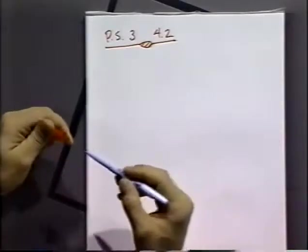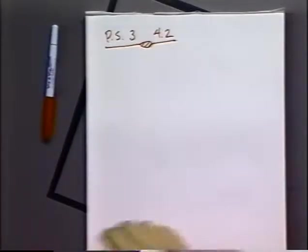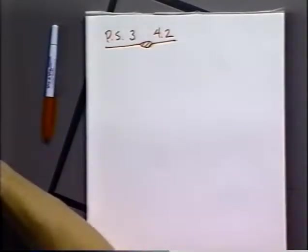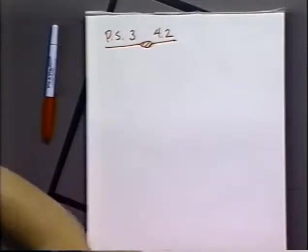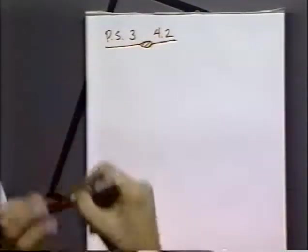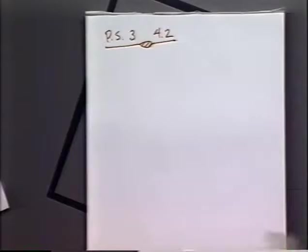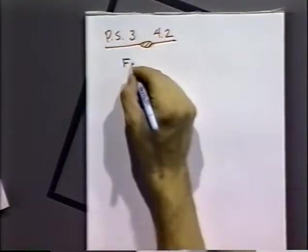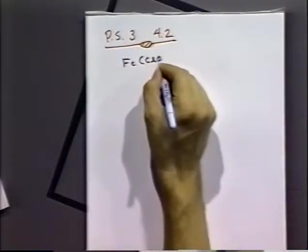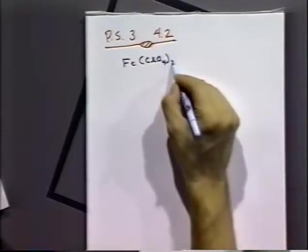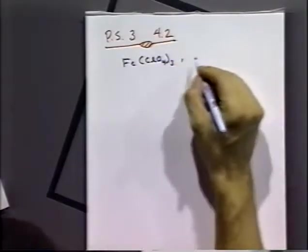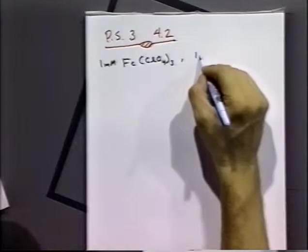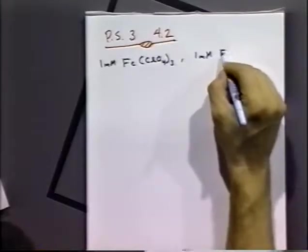Basically what it's asking you is to take a look at a system where we have in solution a certain amount of iron perchlorate, iron 3 perchlorate, and a certain amount, in this case it's one millimolar, but it doesn't really matter, and one millimolar iron 2 perchlorate.